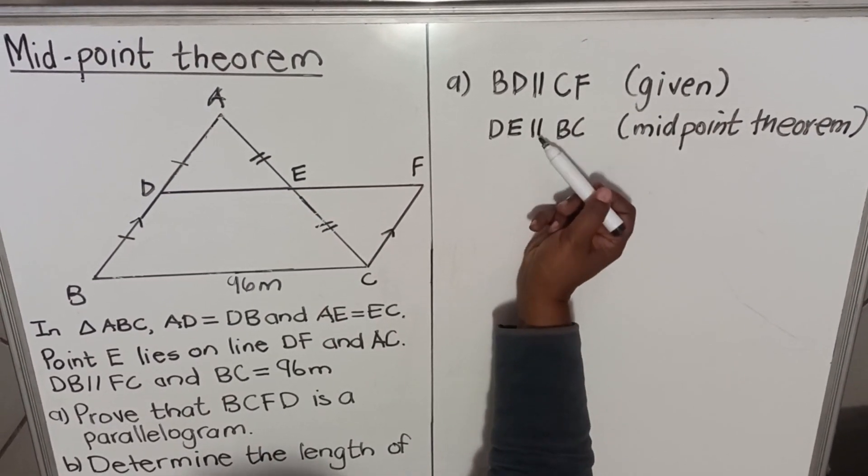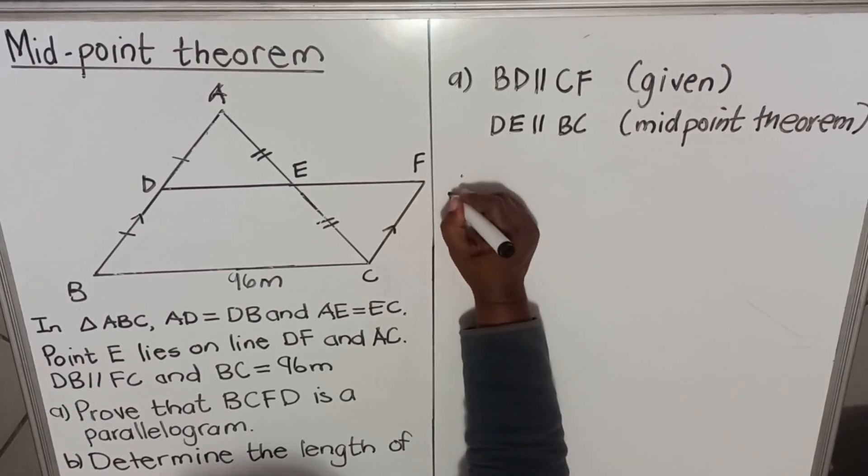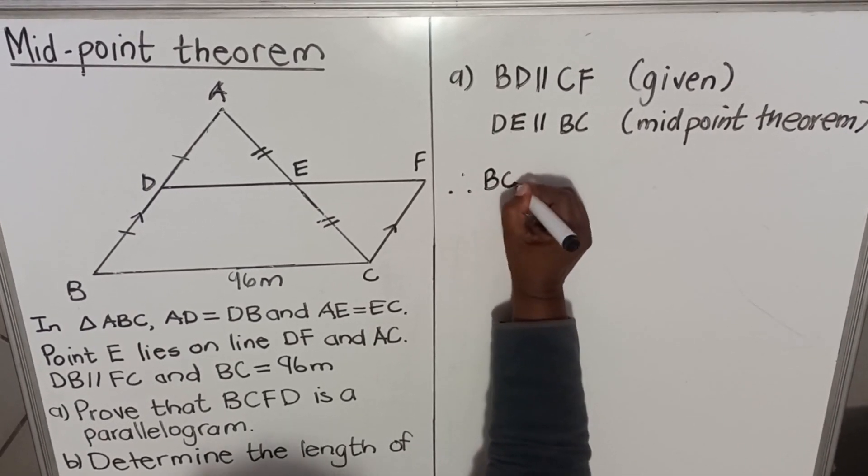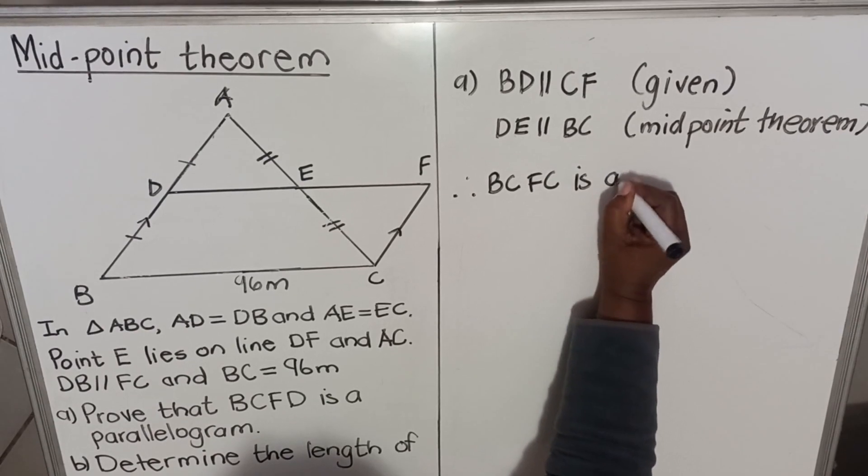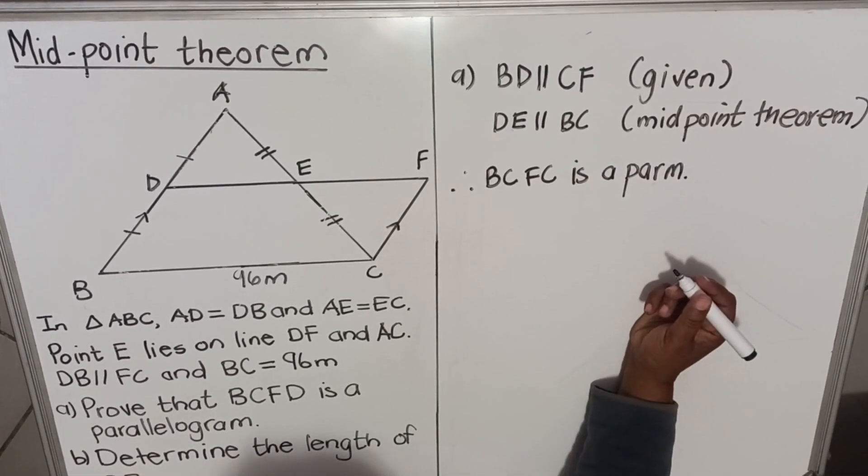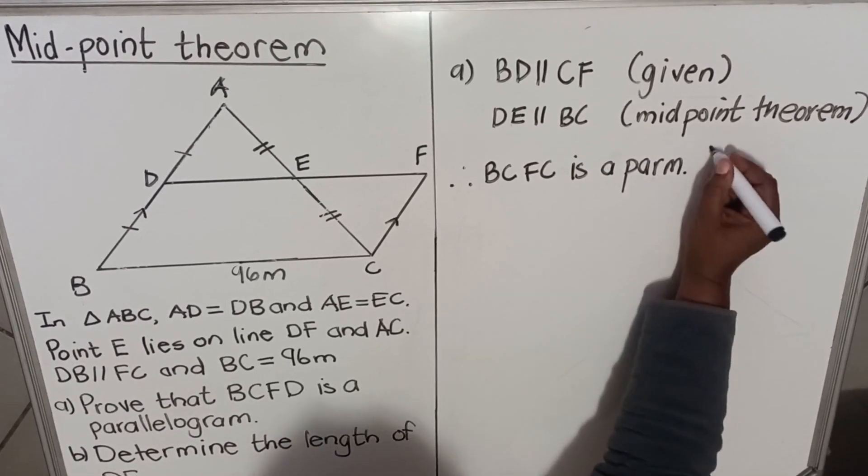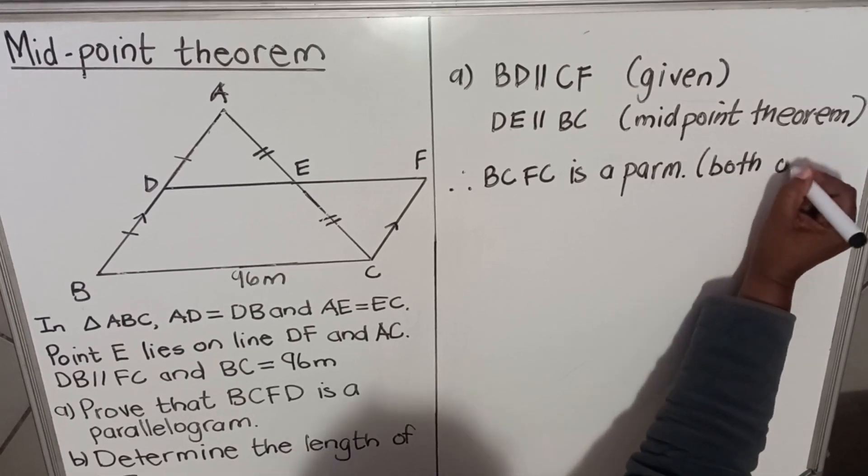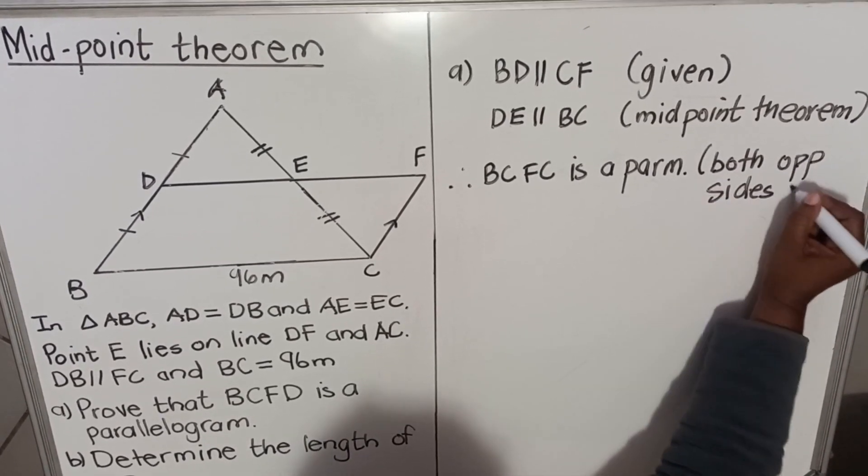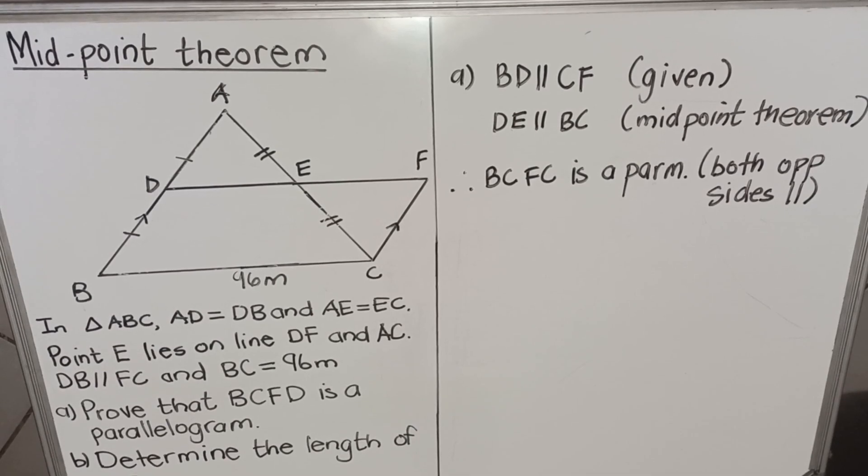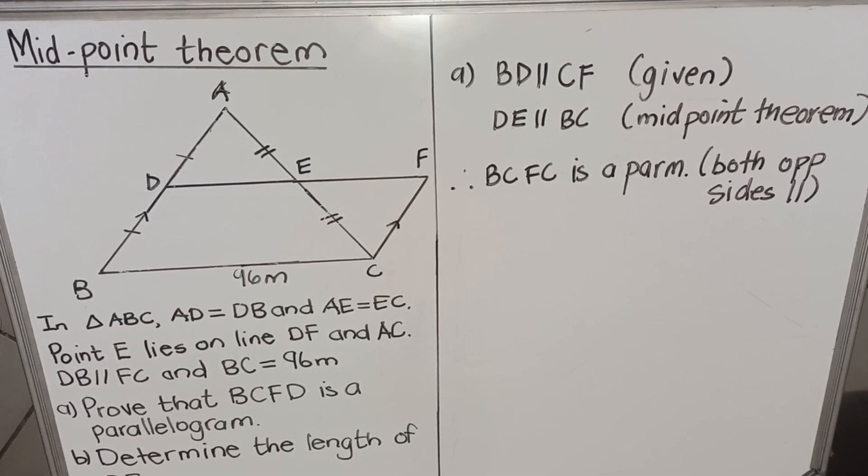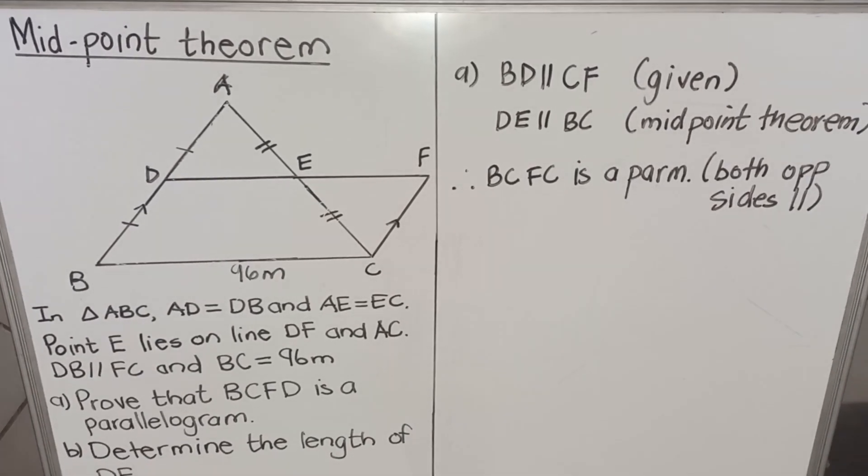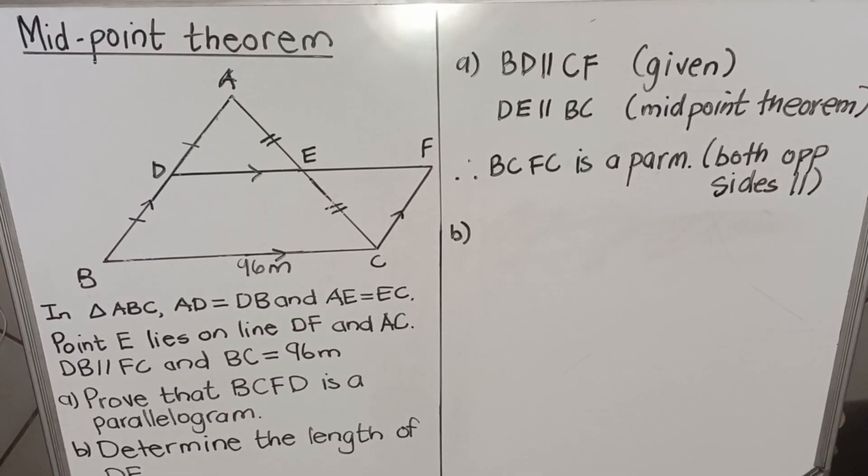So you do have these two opposite sides parallel. So you can say: therefore, BCFG is a parallelogram. You can write 'parm' and your reason is both opposite sides parallel. So this is how you can prove that BCFG is a parallelogram. Let's look at the next question.